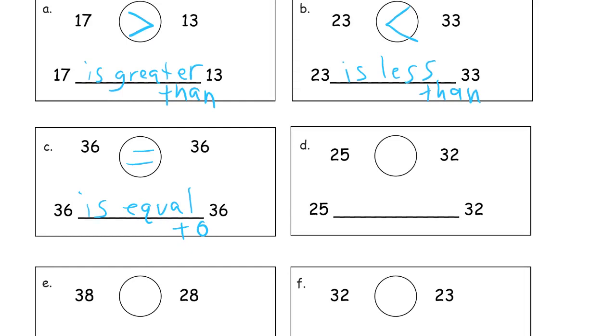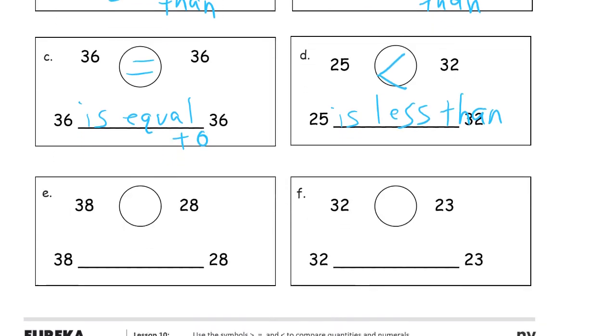25 and 32. 32 is bigger, so the alligator eats the 32. But 25 and 32, 25 is less than 32.